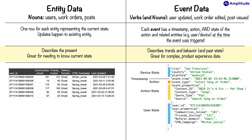With event data, each event has a timestamp, action, and state of the action, and all related entities — for example user or device — at the time the event was triggered. Entity data describes the present and is great for needing to know current state. Event data describes trends and behaviors and past state; it is great for complex product experience data. Entity data looks like a table with a row for each user, their current number of friends, invites, etc. Event data looks like a data structure holding device state, a timestamp, the action, the action state — what we call event properties — and the user state — what we call user properties.